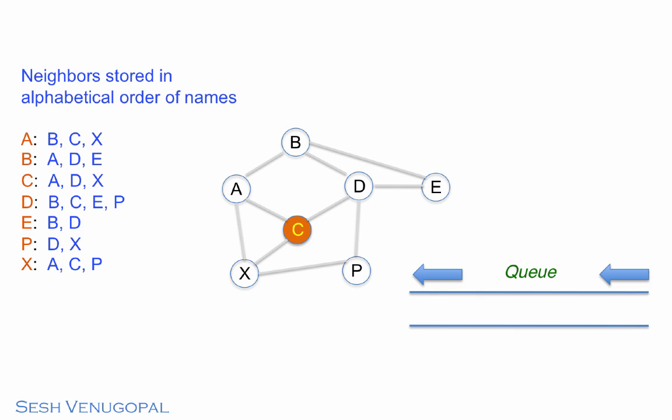Alright, so here goes. The queue is initially empty. C is picked as a starting vertex. It is visited, marked, and added to the queue. The BFS process then goes into a loop, picking vertices from the queue one at a time until the queue is empty. C comes off the queue, and its neighbors are visited in the order A, D, and X. As they are visited, they are marked and added to the queue.